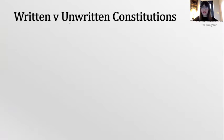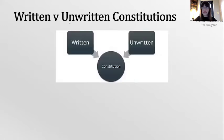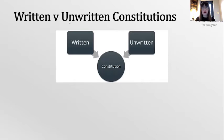We're going to be looking at written versus unwritten constitutions. Most countries have written constitutions and we're going to use the US as an example. A written constitution is when most of the rules for governance are contained in one written document. It sets out the relationships between the citizen and the state and between the different branches — in the US: the senate, the court, and the president — and sets out the framework for how these institutions interact and balance each other.